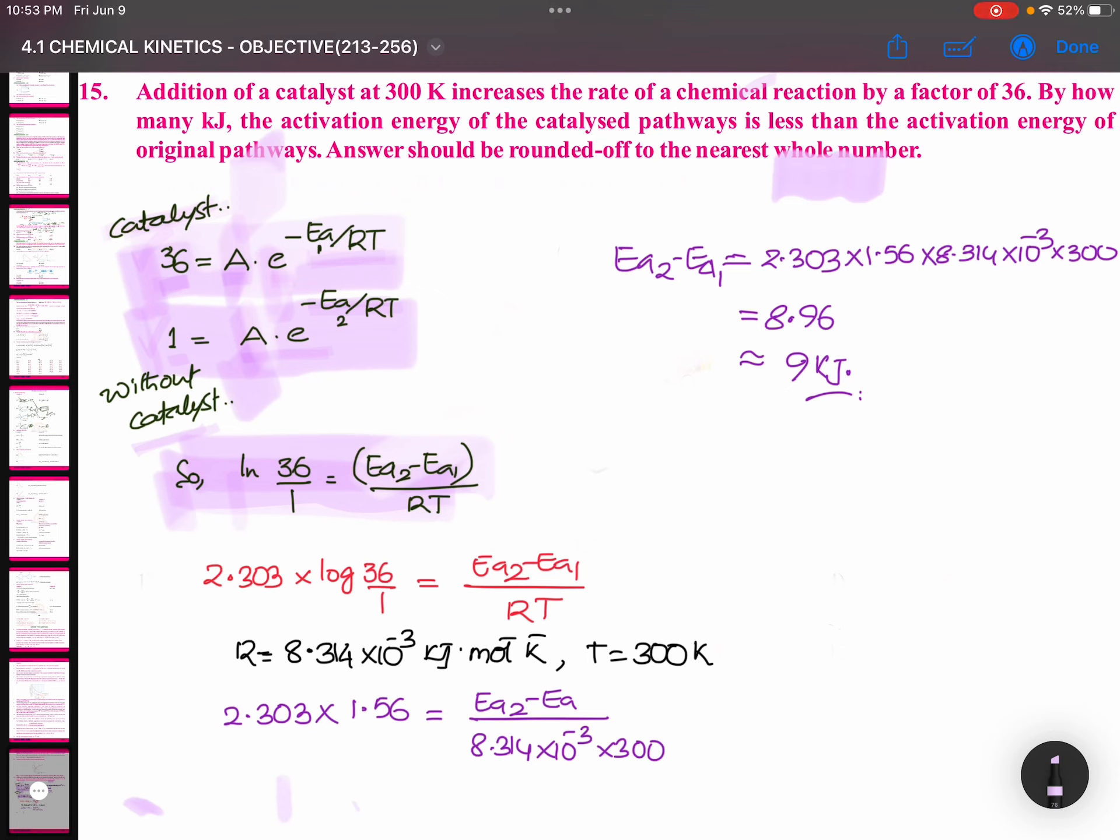Then, I am converting this natural logarithm into log base 10. 2.303 times R. We are multiplying. Ea2 minus Ea1, as it is, by RT. R value is 8.314 times 10 to the power of minus 3 kilojoule per mole per Kelvin. Temperature is given in the question as 300 Kelvin.